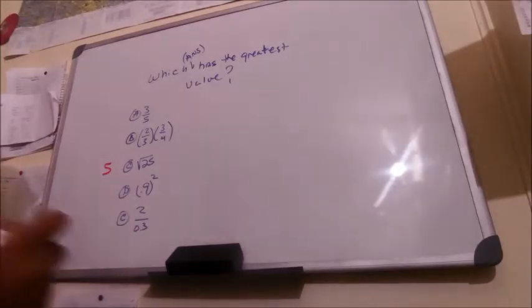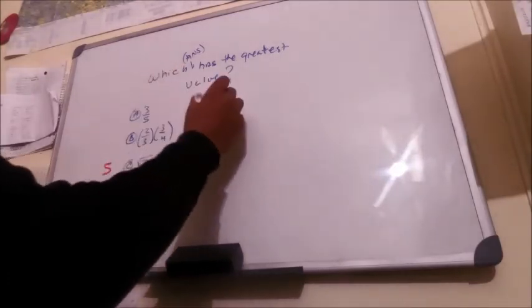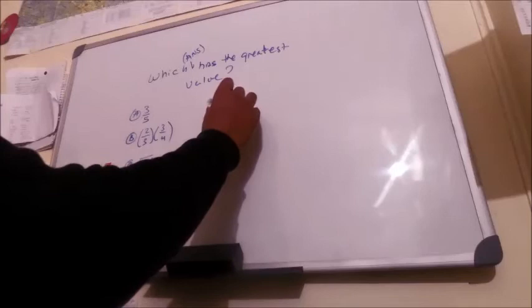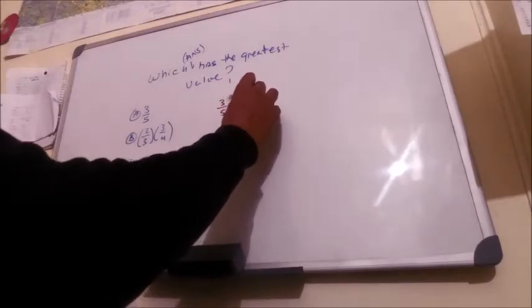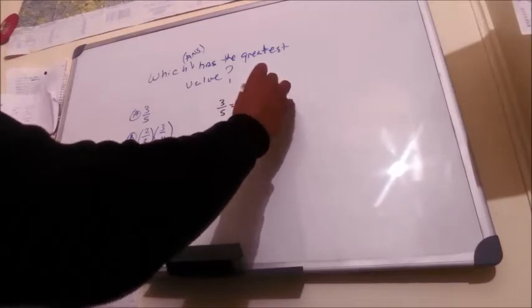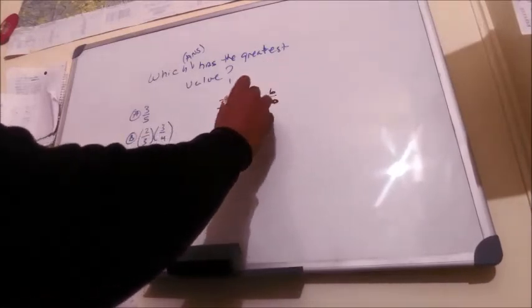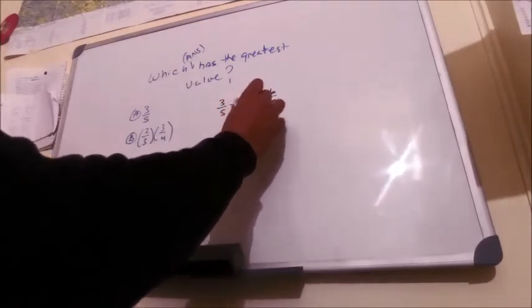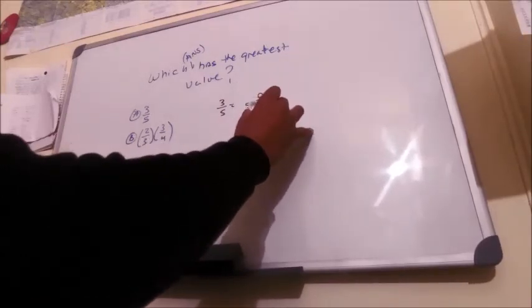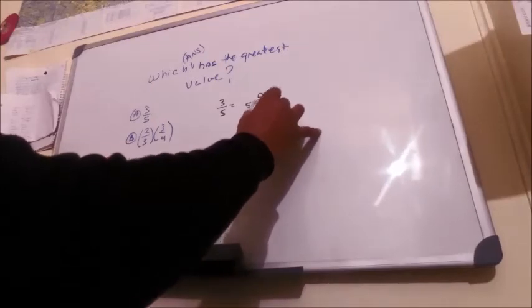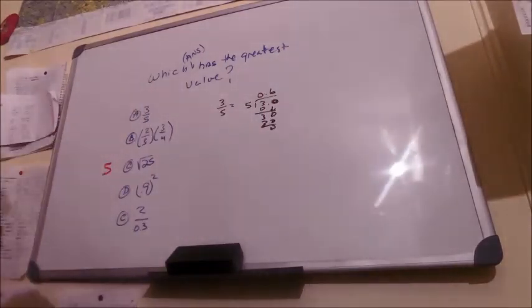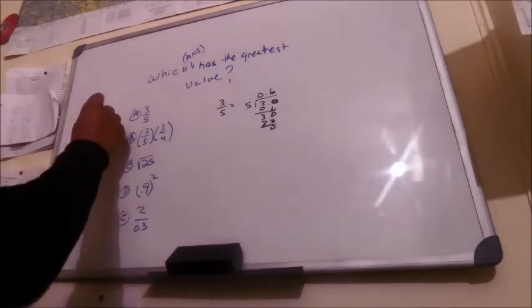A is a division problem. 3 over 5 is equal to 3 divided by 5. I'll put a 3.0 because I know it's going to be 0.6. 5 goes into 30 six times, 6 times 5 is 30. So the answer to A is 0.6.